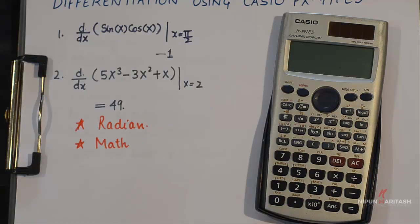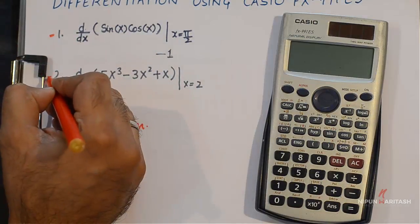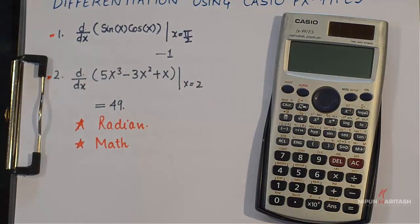I'll show this with an example. I have two problems written on the paper: one is a trigonometric function and the other one is an algebraic function. Before we perform these operations on the calculator we need to make sure that the calculator is set to radian and in the math mode.